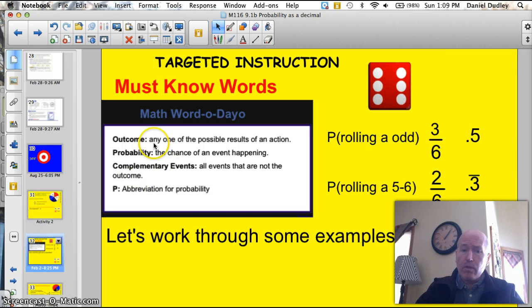Quick review. Don't forget that an outcome is any one of the possible results of an action. Every time I spin this dice, there's a 1 in 6 chance I'll get one of those numbers. So it could be a 1, a 2, a 3, a 4, a 5, or a 6. Those are all my possible outcomes. The probability, then, is the chance of that event happening. Let's take a look at this one here. We want to know what the probability of rolling an odd number is.